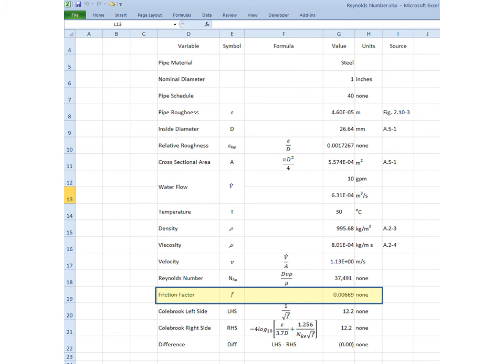After Solver has run, we find that the friction factor that sets my difference equal to 0, and that value of f is 0.00669.